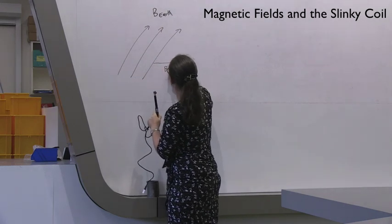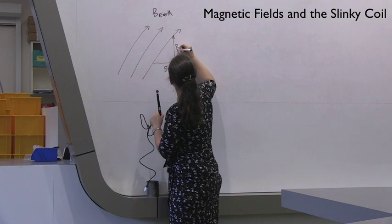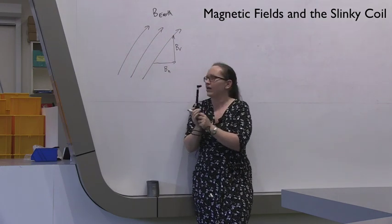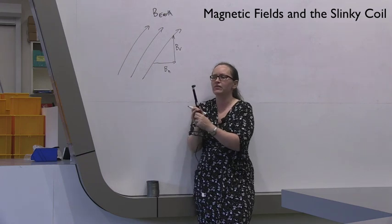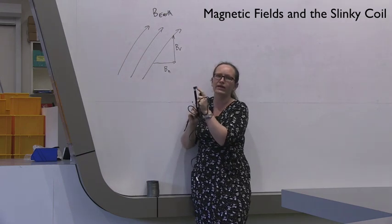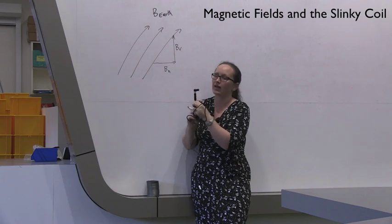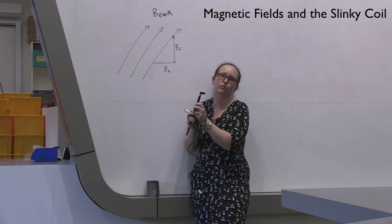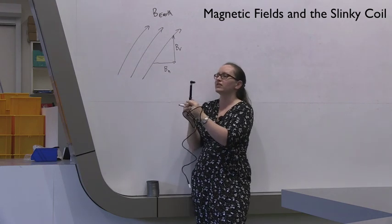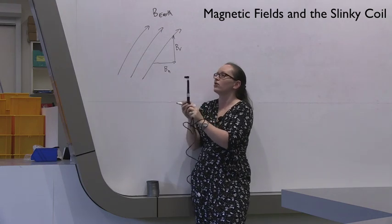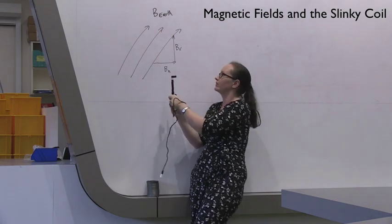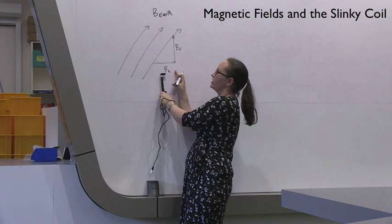And what I'm going to need to do is measure the horizontal and vertical components of the Earth's magnetic field. So let's call that BH, B horizontal, and this BV, B vertical. But there is a zero error with this probe. So how I'm going to do that is it's got a white dot on the end of the probe, and it's literally measuring the magnetic field lines pointing out of that white dot.